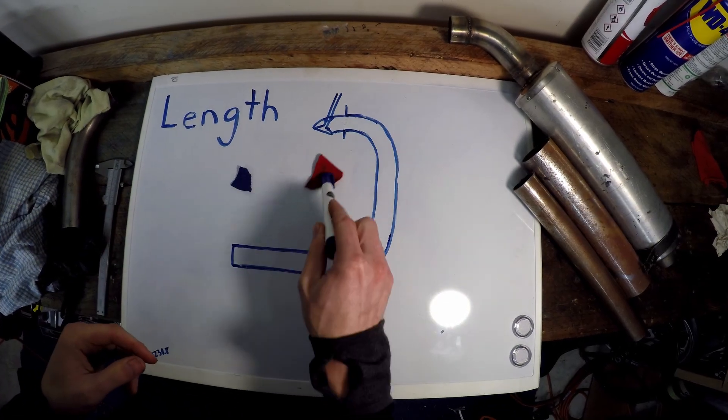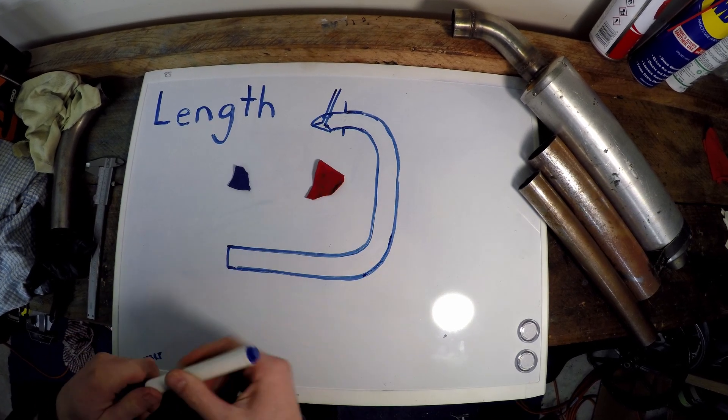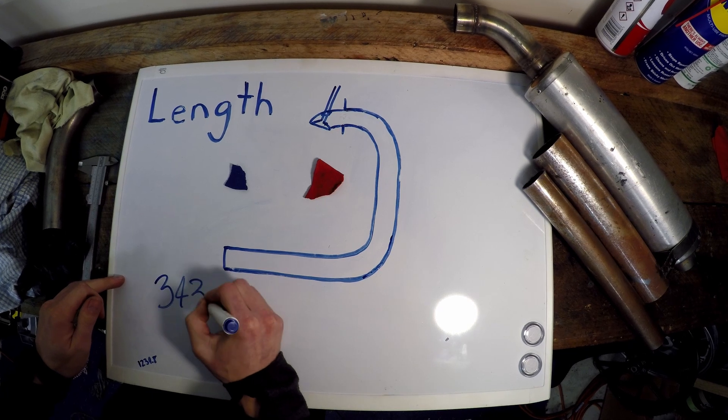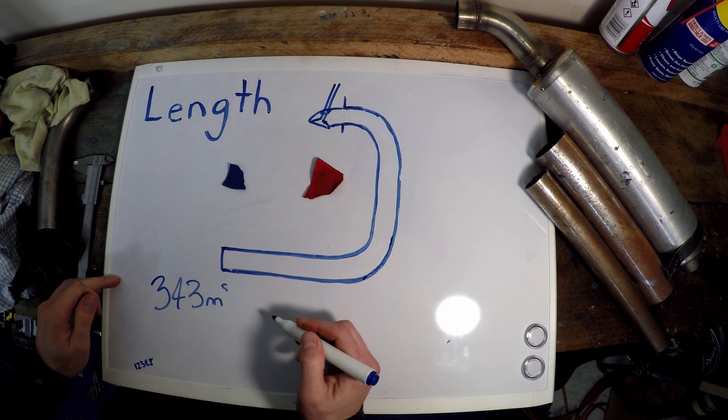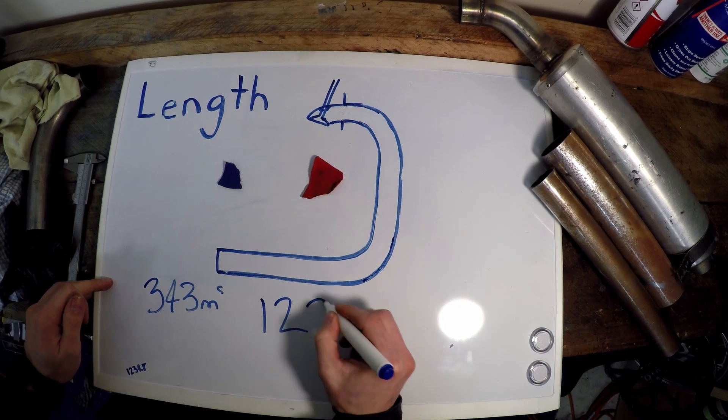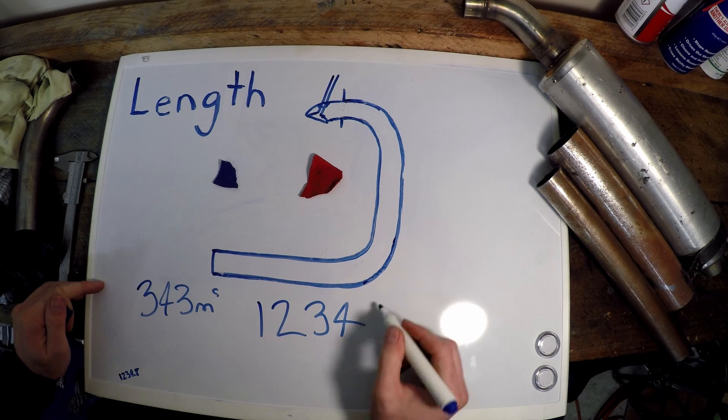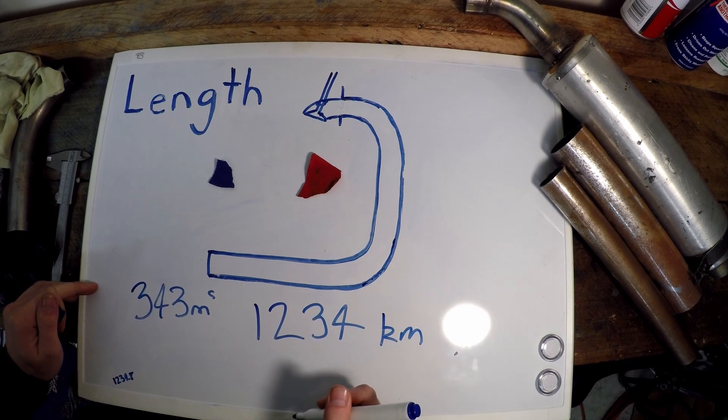Something to know about these exhaust gas pressure waves: they're traveling at the speed of sound, which is 343 meters per second, which works out to roughly 1,234 kilometers per hour. That's a lot faster than your motorcycle.